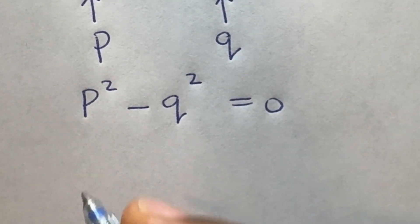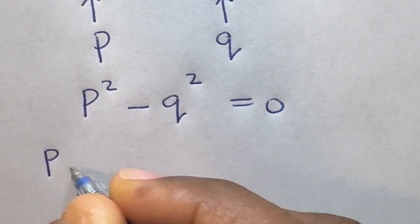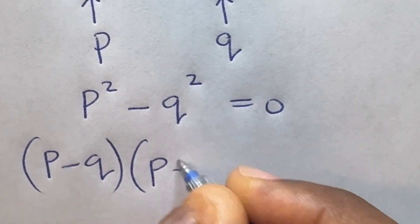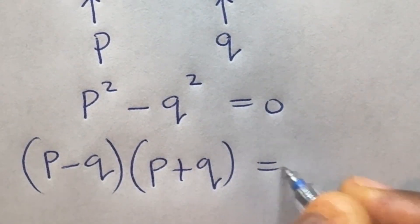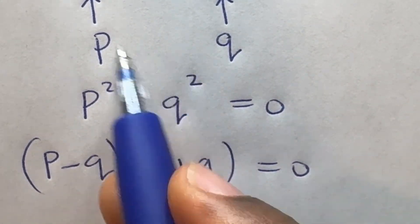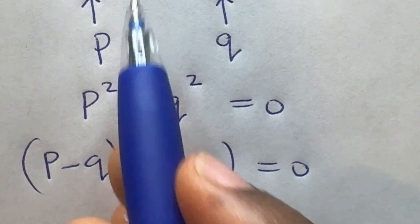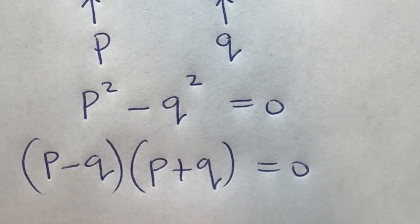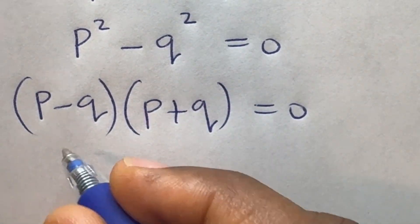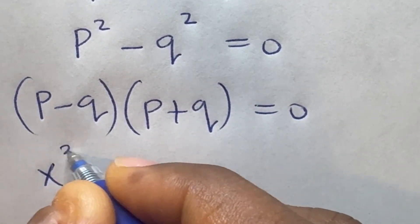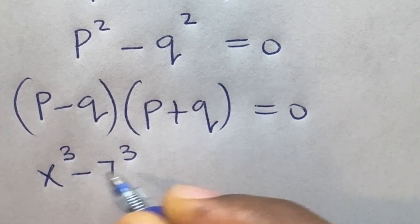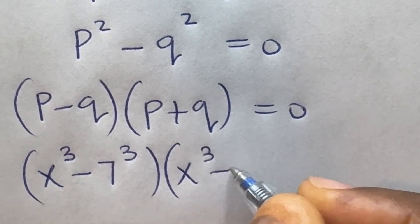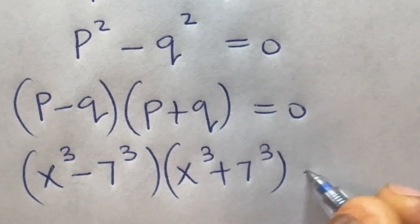This is a difference of two squares and we can express this as (p minus q) times (p plus q). I introduced p and q to make the expression look easy, but returning x³ for p and 7³ for q, the equation becomes: x³ minus 7³ times x³ plus 7³ is equal to 0.